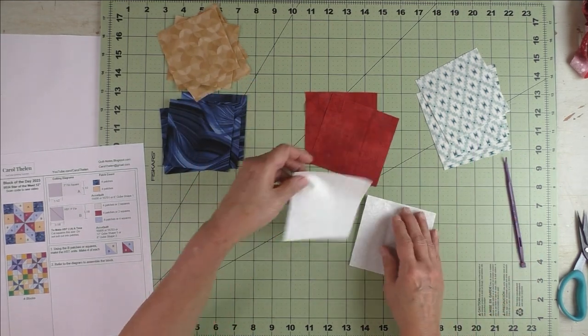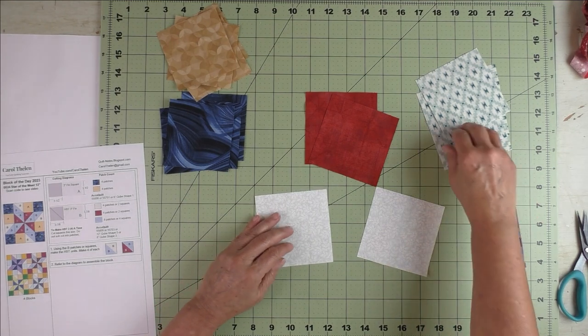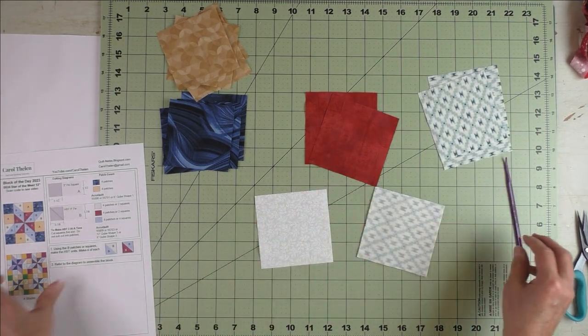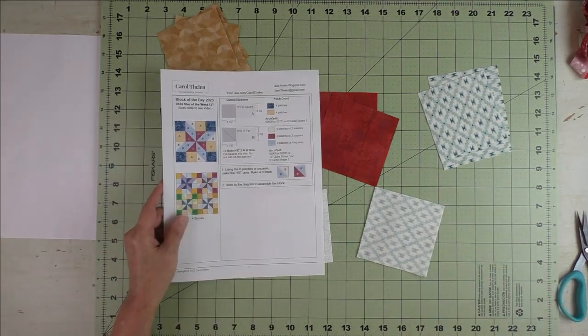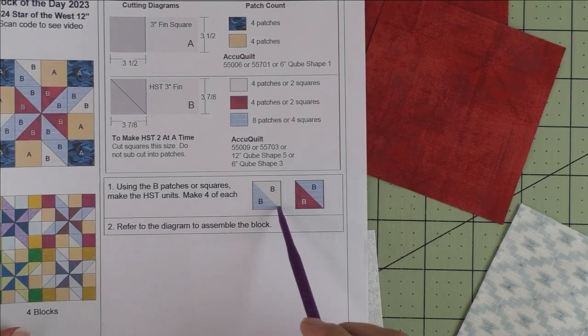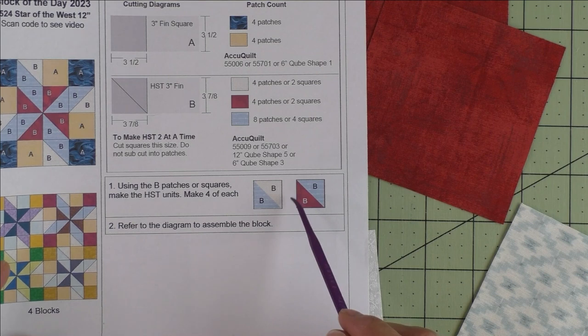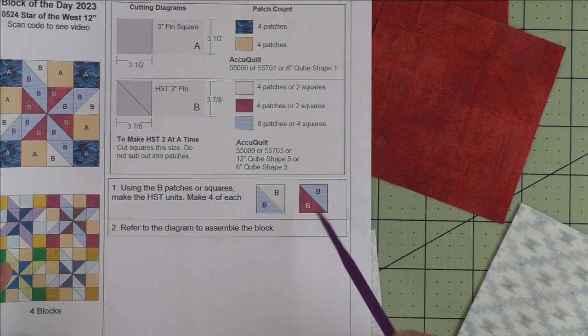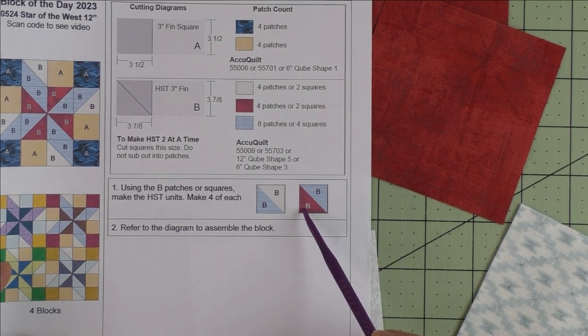To make the half-square triangles two at a time, we take these patches and match them up. If you look on the paper here, we have two different colorings of the half-square triangle. The first one is the light fabric with the light blue. And the second is the light blue with the red.